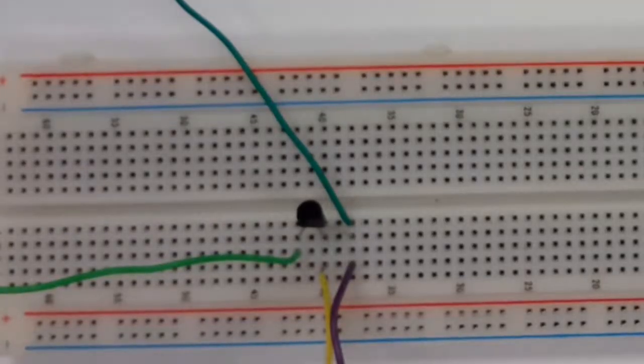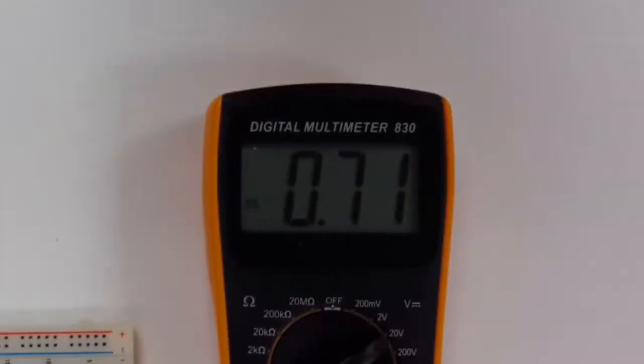Right now, at room temperature, this thing is measuring 0.71 volts, and it's supposed to be calibrated. So let's figure out what 0.71 volts means.